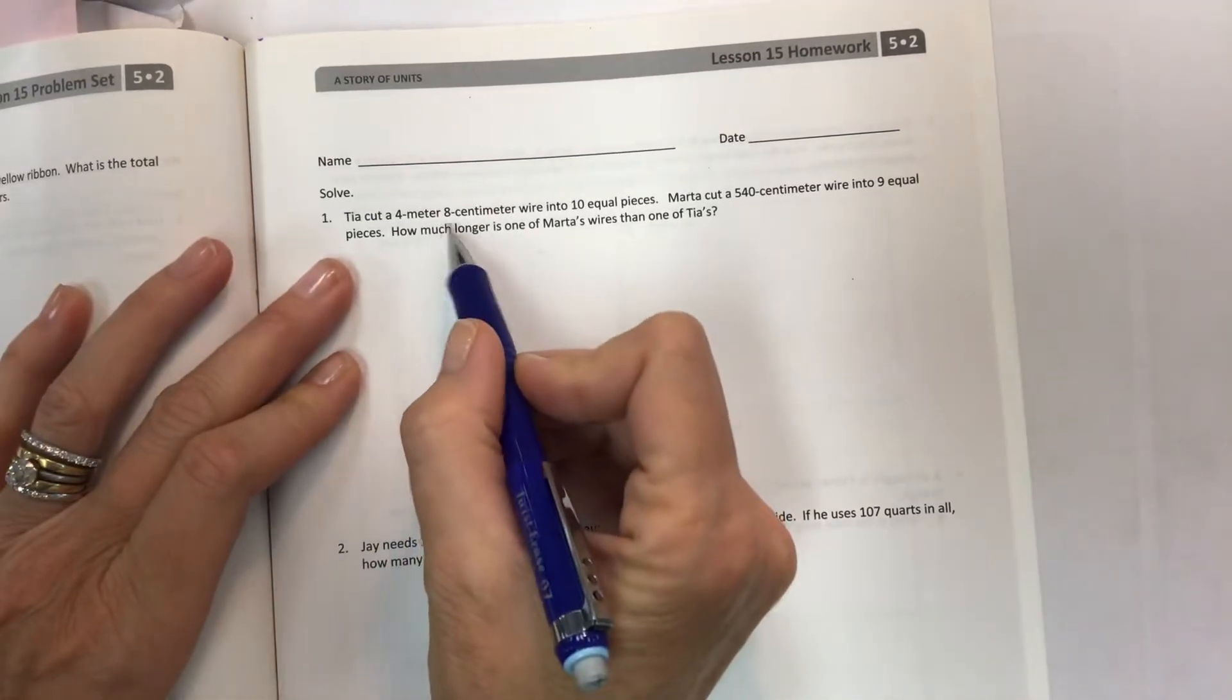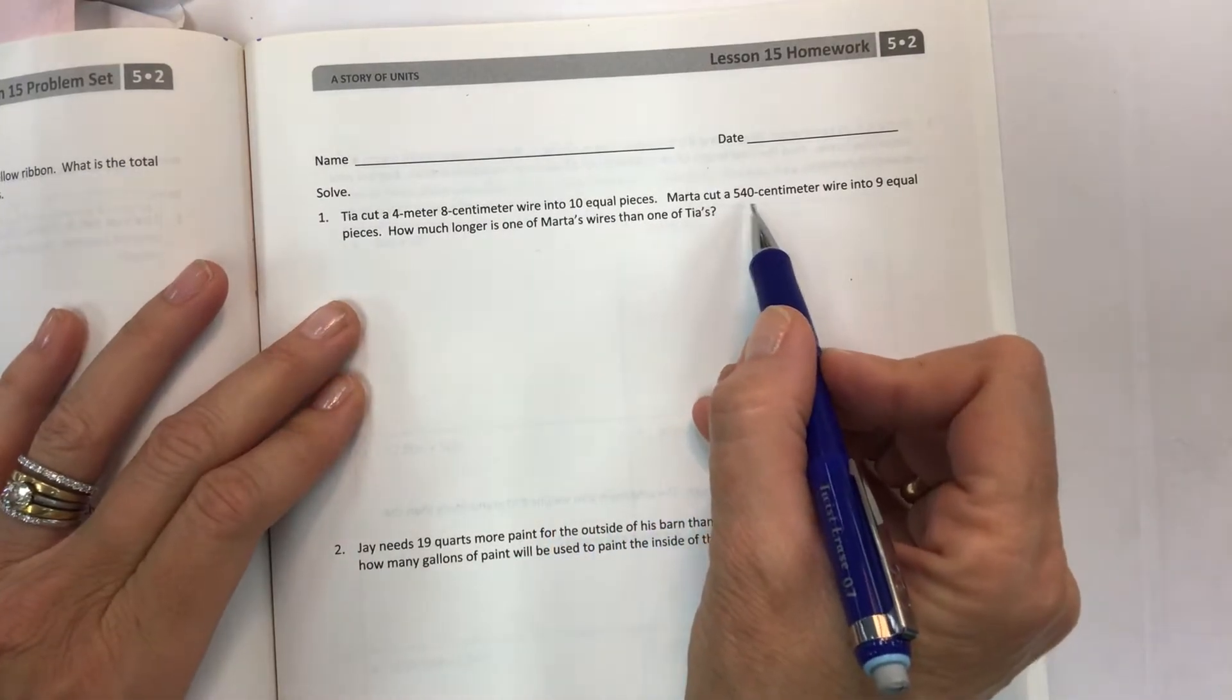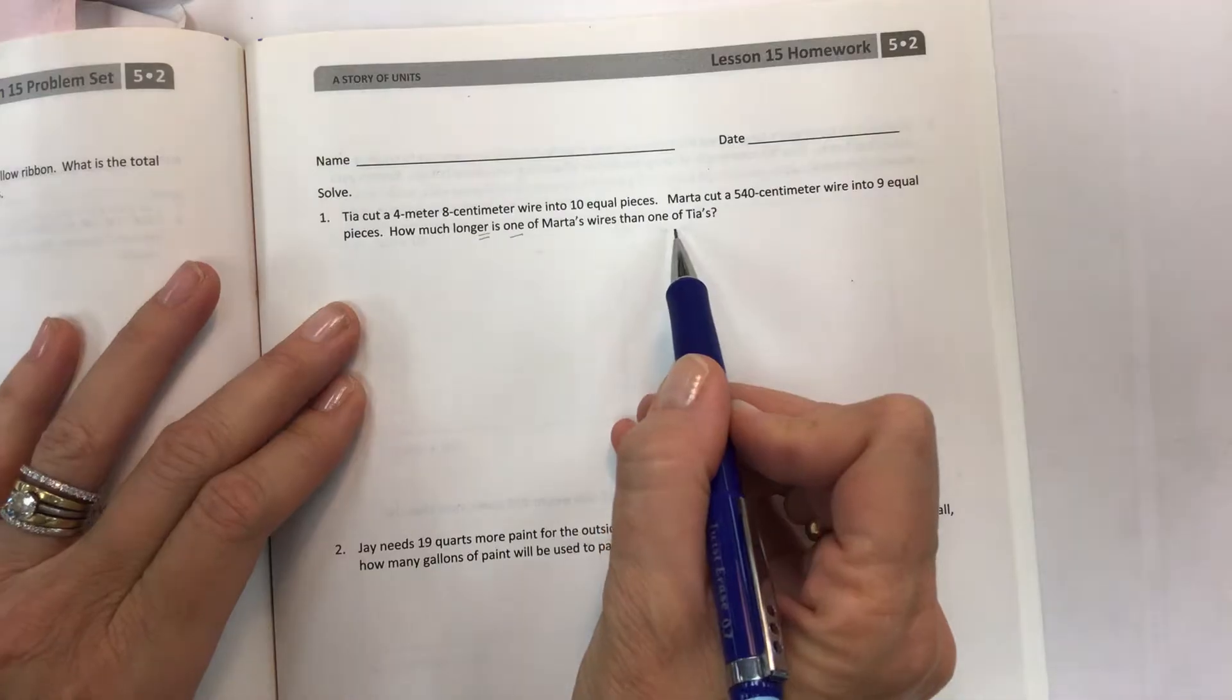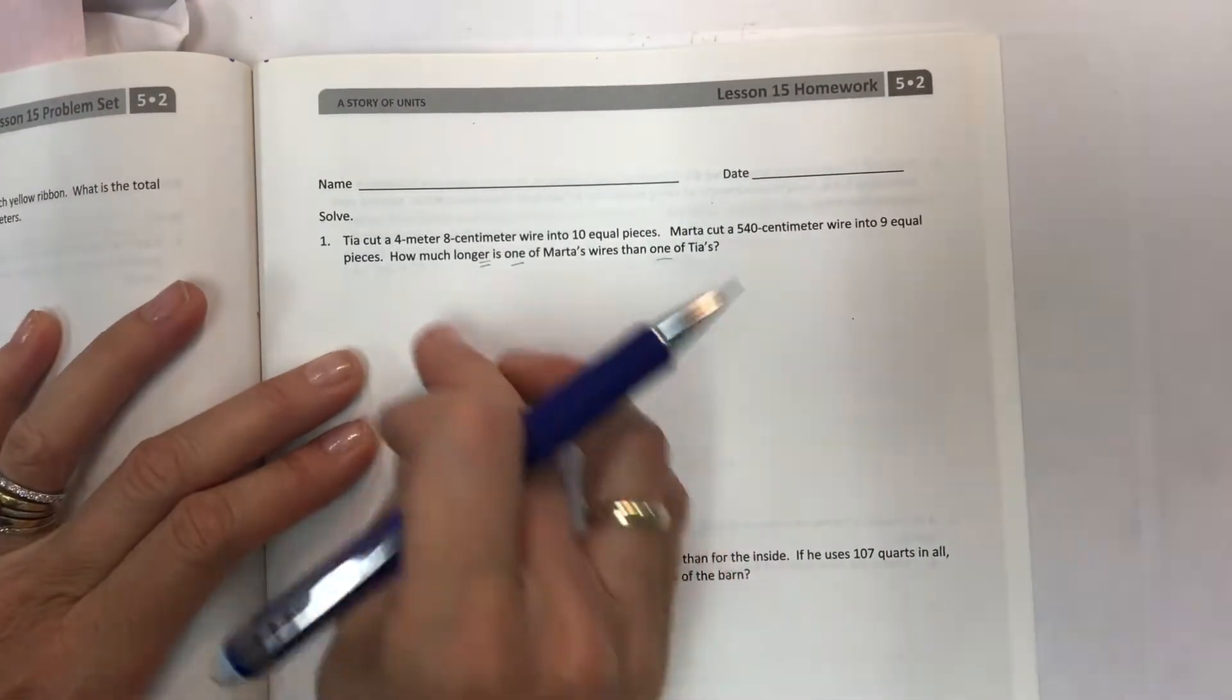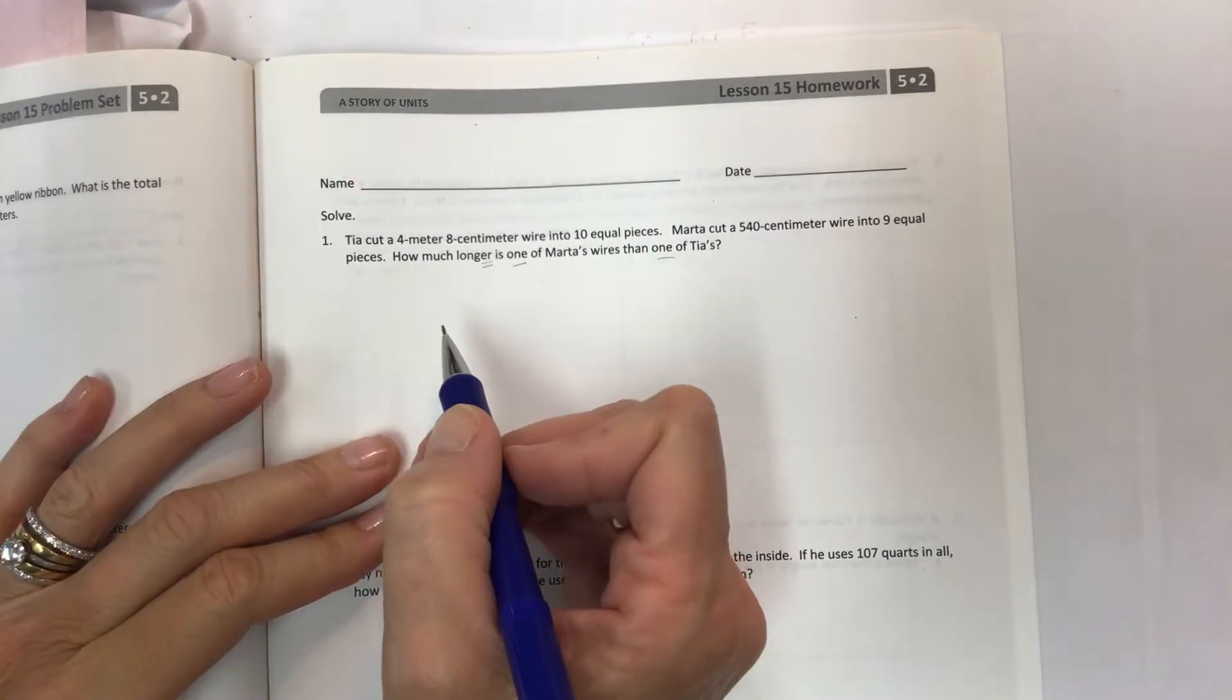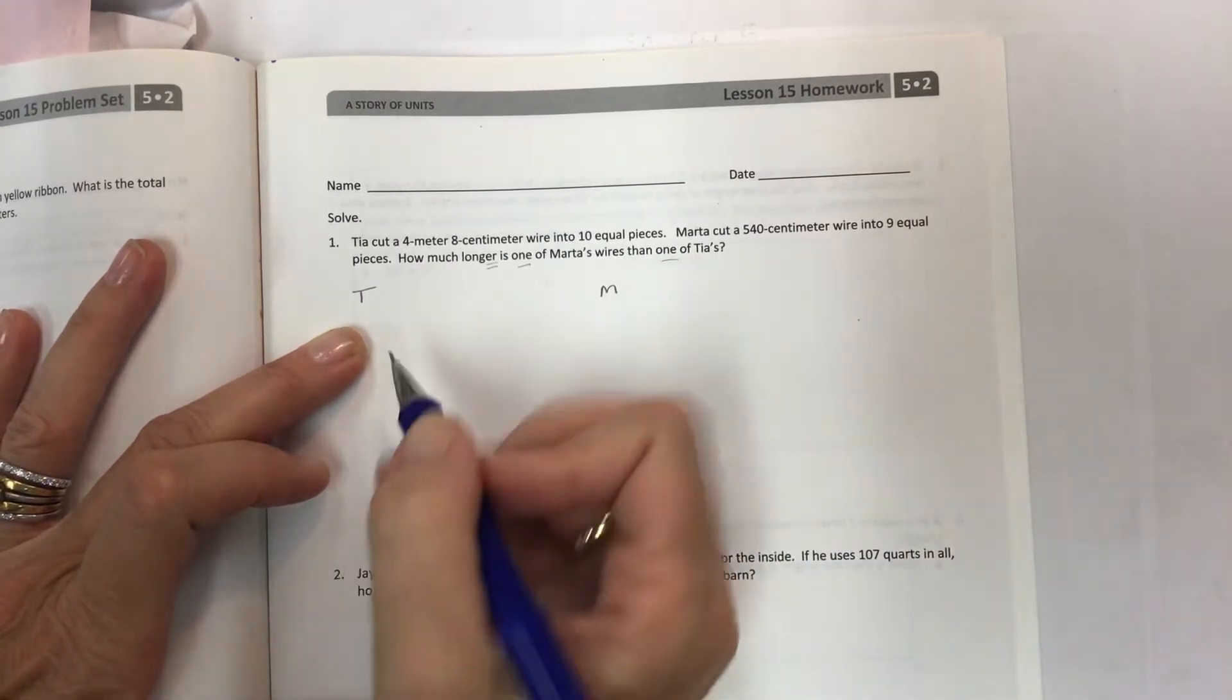Tia cut a 4 meter 8 centimeter wire into 10 equal pieces. Marta cut a 540 centimeter wire into 9 equal pieces. How much longer is one of Marta's wires than one of Tia's? So again we're going to be using these tape diagrams to help us kind of see what we have and what we don't have and it can help give us the numbers that we need sometimes. So let's make a picture for Tia and Marta. So we'll just do T and M.